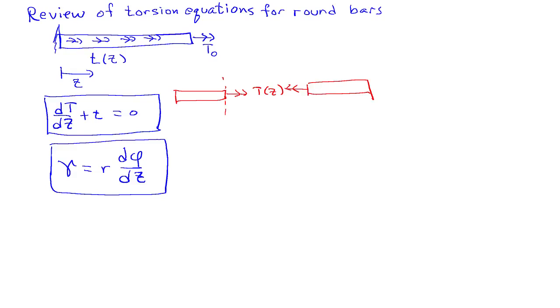So if I make a picture of the cross section a little bit bigger here, so that's the cross section of the bar, and r is just simply measured distance from the center of the bar. So that's r there.